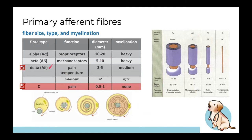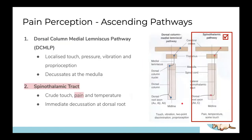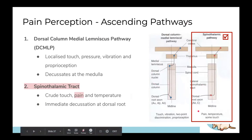A-delta and C fibers are responsible for pain — A-delta has some myelination, C fibers have none. This is different from A-alpha and A-beta fibers, which are responsible for normal sensation. Do remember that distinction, as it is high yield. In ascending pathways, all pain, crude touch, and temperature travel via the spinothalamic pathway, decussating immediately at the spinal cord and travelling contralaterally straight up to the cerebral cortex.